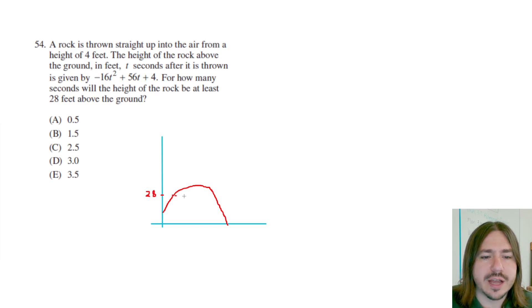So really we're looking for the time from here to here. How long is this time? The rock goes up, it crosses, it goes above 28 feet, and then comes back down. And so what we need to do is figure out when exactly is the rock at 28 feet, and then we can subtract this time minus this time to find the difference.